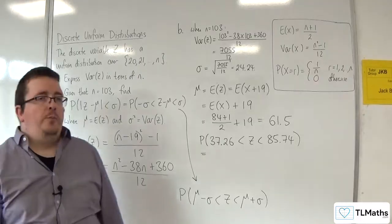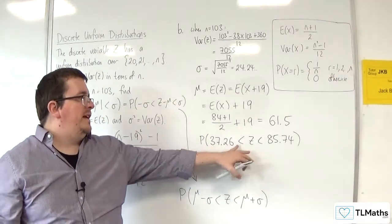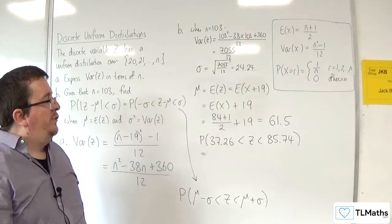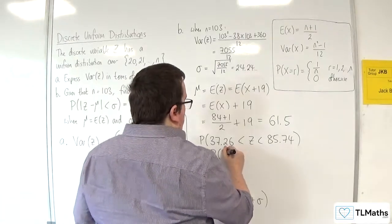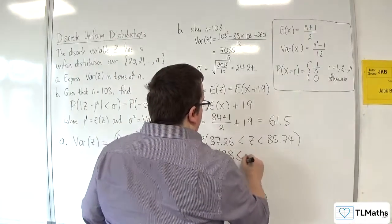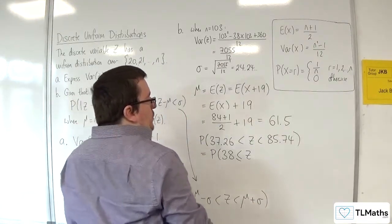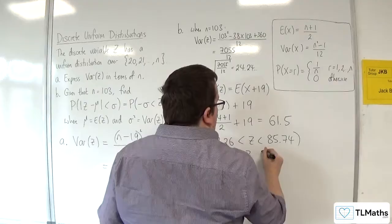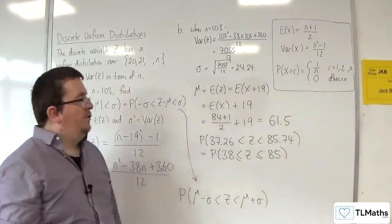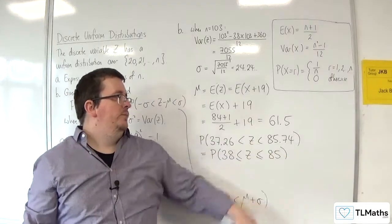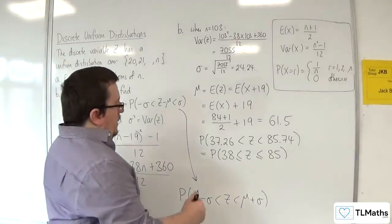Because we're using a discrete distribution here, the 37.26 z can never actually be that, but z has got to be greater than that. So this is the same as me saying that z has got to be greater than or equal to 38. And it can't actually get to 85.74, so this is the same as me saying z has got to be less than or equal to 85, because it's got to be less than 85.74. The next integer down will be 85.